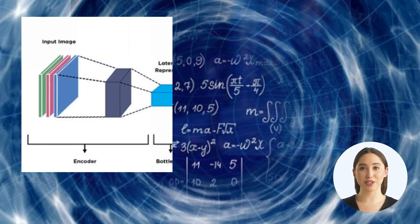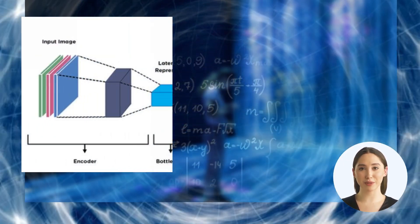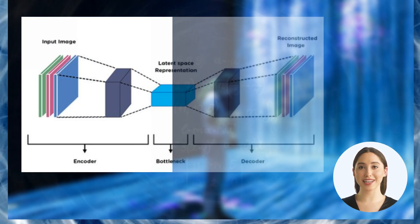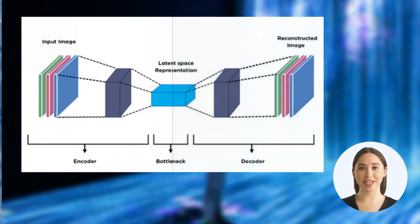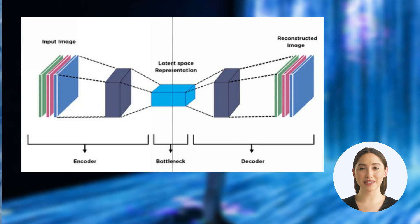So how do autoencoders work? Autoencoders are made of two parts, an encoder and a decoder. The encoder takes the input data and compresses it into a smaller set of features. The decoder then takes those features and reconstructs the original input data.